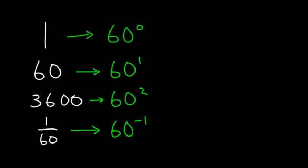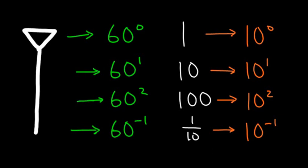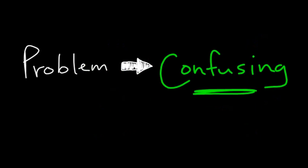So you could compare that to our symbols, except we had the advantage of zero. So we can differentiate between 10 to the zero, 10 to the first, 10 to the second. For them, it was all just that one symbol. They just had that one. So like I said, that caused a problem. It was confusing.